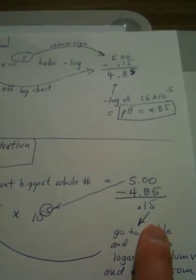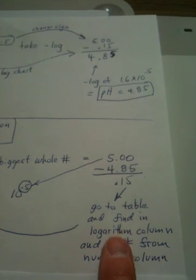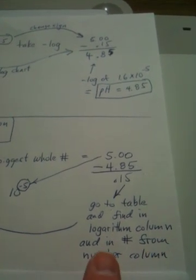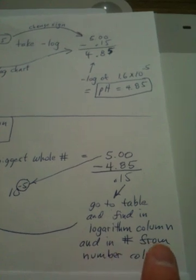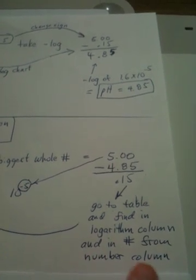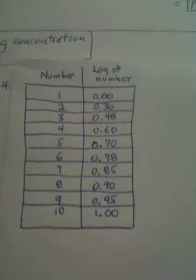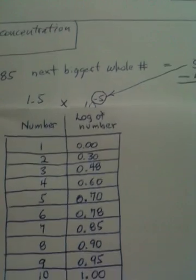and that is going to leave us with 0.15. What is the 0.15? Well, we're going to go to our table, and we're going to find in the logarithm column and look at the number from the number column. Let's look at the chart again.